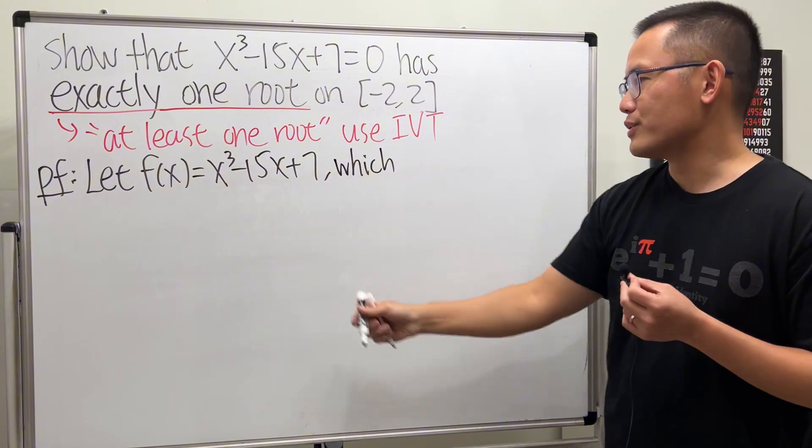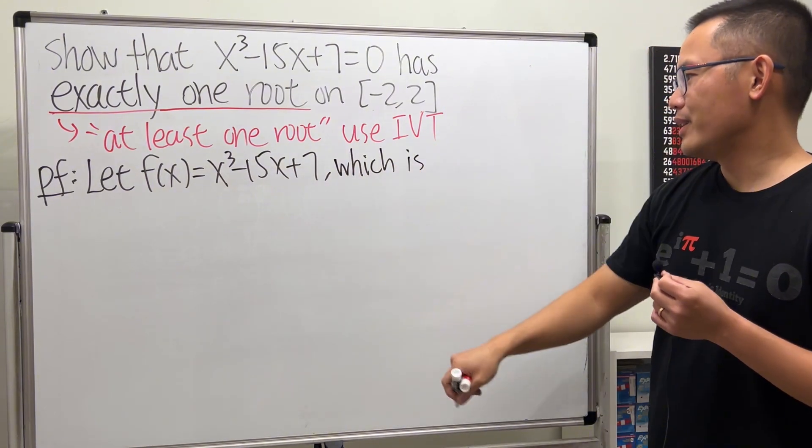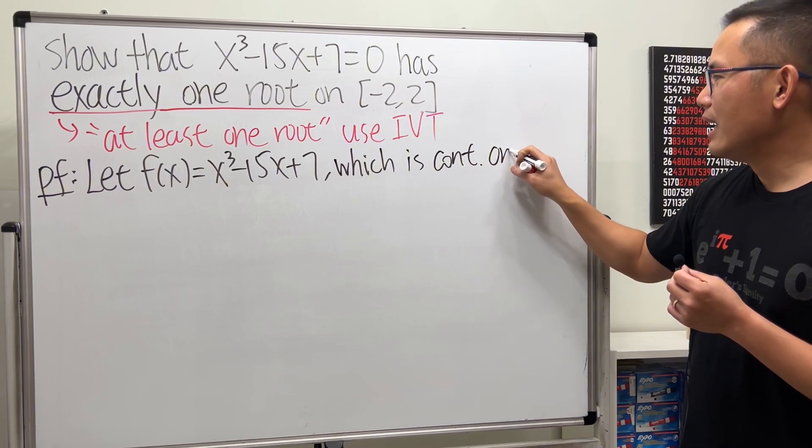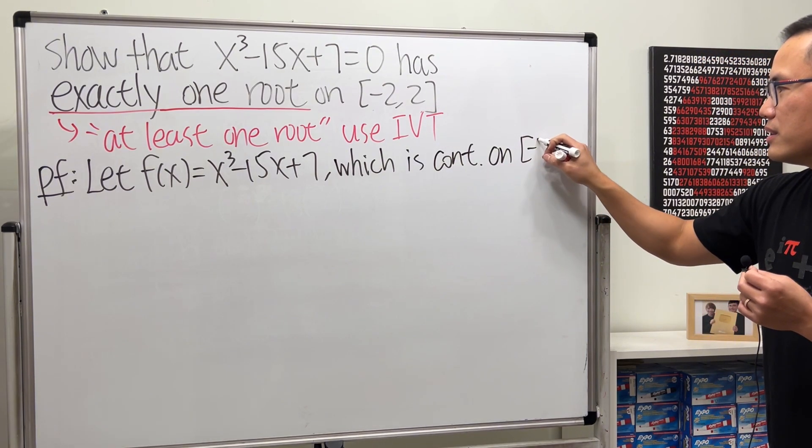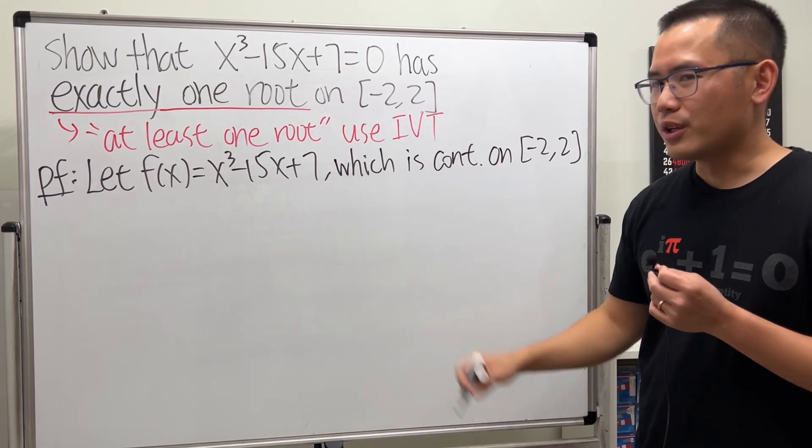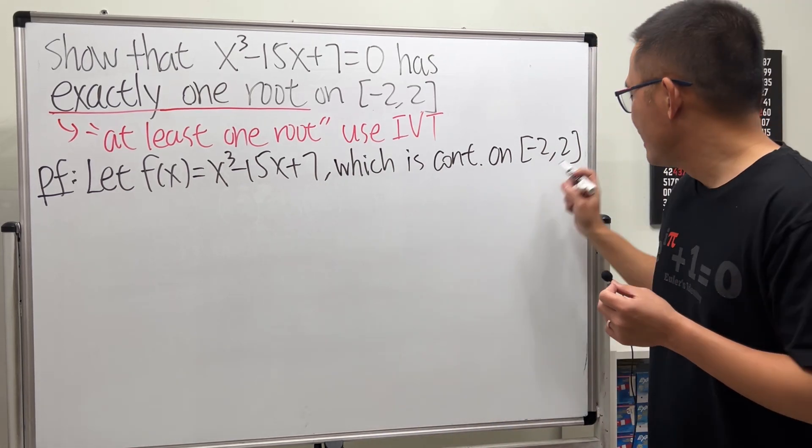Which it is, because it's a cubic function—it's always continuous. But I'm just going to say that it's continuous on the interval that we care about, which is negative 2 to 2. I think this is pretty clear because it's a cubic function.